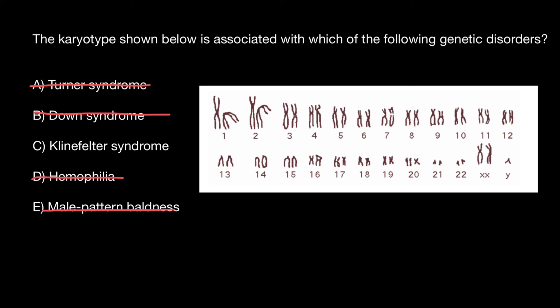Having one extra X chromosome is not as deleterious as having an extra autosomal chromosome, which would cause very serious health issues — even a small chromosome like 21, but the bigger the chromosome, the bigger the health issues. So the correct answer is Klinefelter syndrome. That's all for today — thank you for your attention, please subscribe for my new videos that I post almost every day, and see you in the next video. Goodbye.